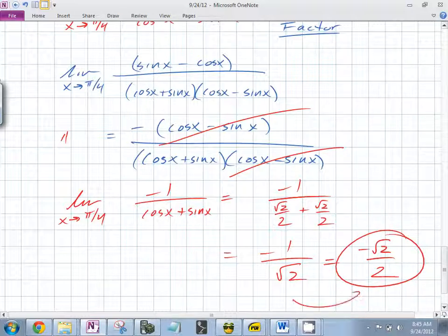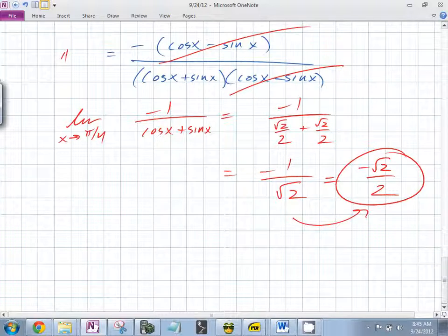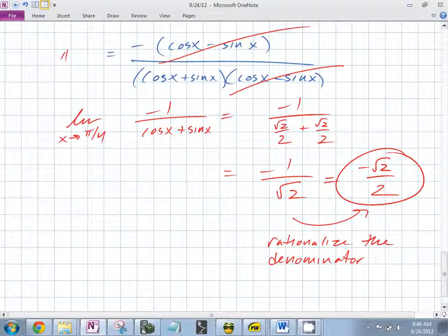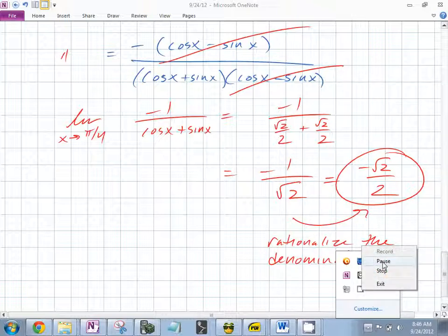One from the numerator. So this equals negative outside cosine x minus sine x over cosine x plus sine x times cosine x minus sine x. Now what cancels? That cancels with this, and you're left with the limit as x goes to pi over 4 of negative 1 over cosine x plus sine x. What does that equal? Negative 1 over what? What's cosine of pi over 4? And what's sine of pi over 4? So what do you end up with? Negative 1 over root 2. What's that equal to? Negative root 2 over 2.